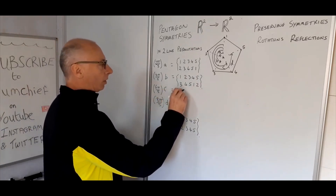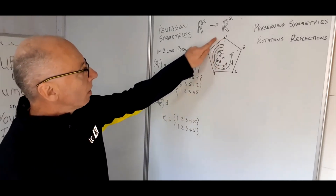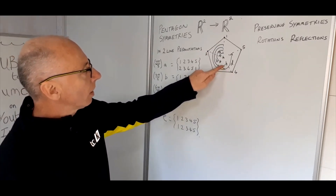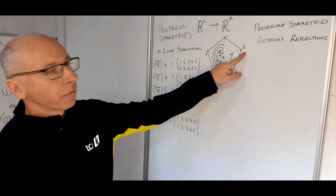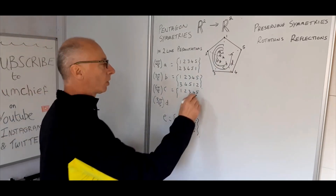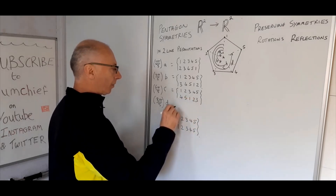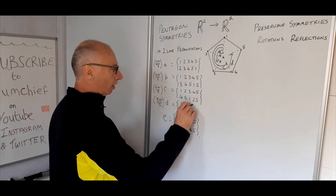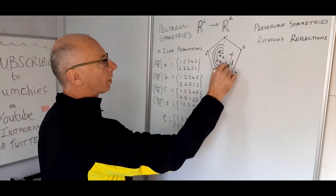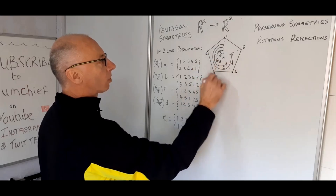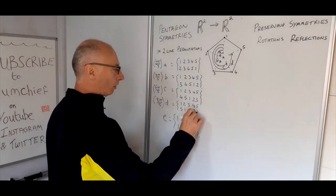For rotation C through 6π over 5, it's like adding 3 modulo 5, so 1 goes to 4, 2 goes to 5, then 1, 2, 3. And finally D, which brings 1 all the way round to 5 — it's like adding 4 modulo 5. So the second line is 5, 1, 2, 3, 4.